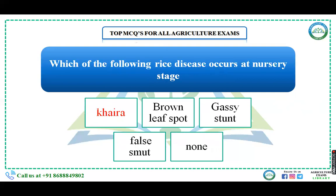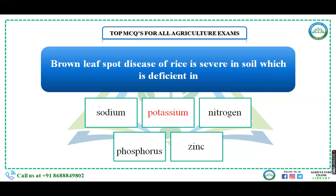Which rice disease occurs at the nursery stage — Khaira disease, Brown Leaf Spot, Grassy Stunt, or Smut? Khaira disease occurs at the nursery stage. It was first reported by Y.L. Nene in 1966 at Pantnagar. Khaira disease is a zinc deficiency disease, and it can be managed by spraying zinc sulfate at the nursery stage. The right answer is Khaira disease.